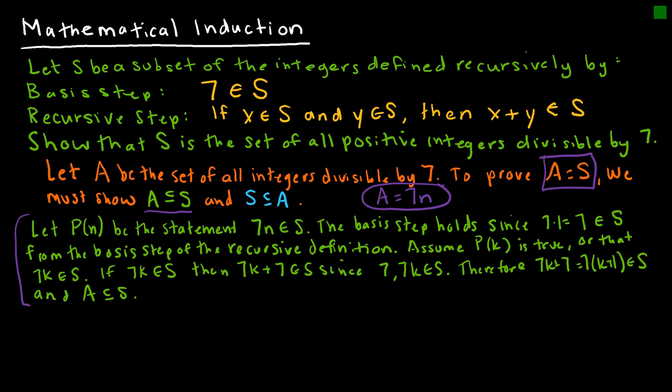The basis step holds because 7 times 1 — which is the first element of A — is 7, and 7 belongs to S from the basis step of the recursive definition. We already know that 7 belongs to S.